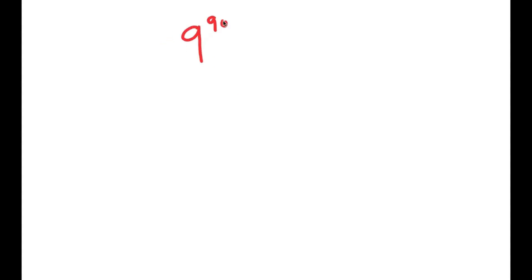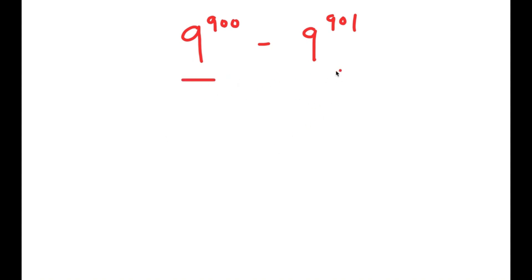In this video I'm going to be solving the problem 9 to the power of 900 minus 9 to the power of 901. To solve this I'm going to start by evaluating my terms. We have 9 to the power of 900 and 9 to the power of 901, and these two terms are pretty similar except that the exponent for 9 to the power of 900 is one less than the exponent for 9 to the power of 901.